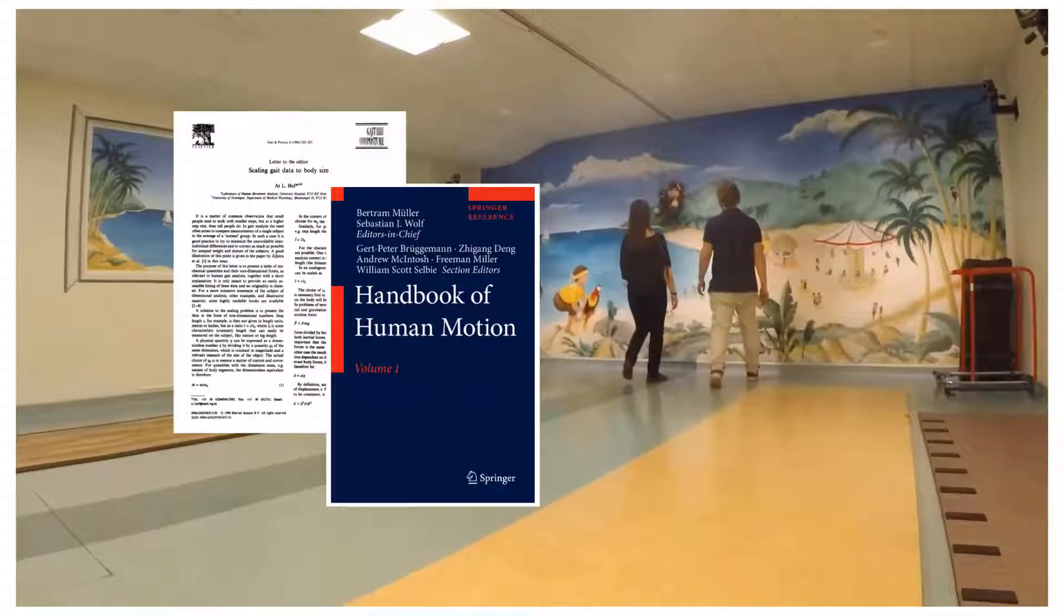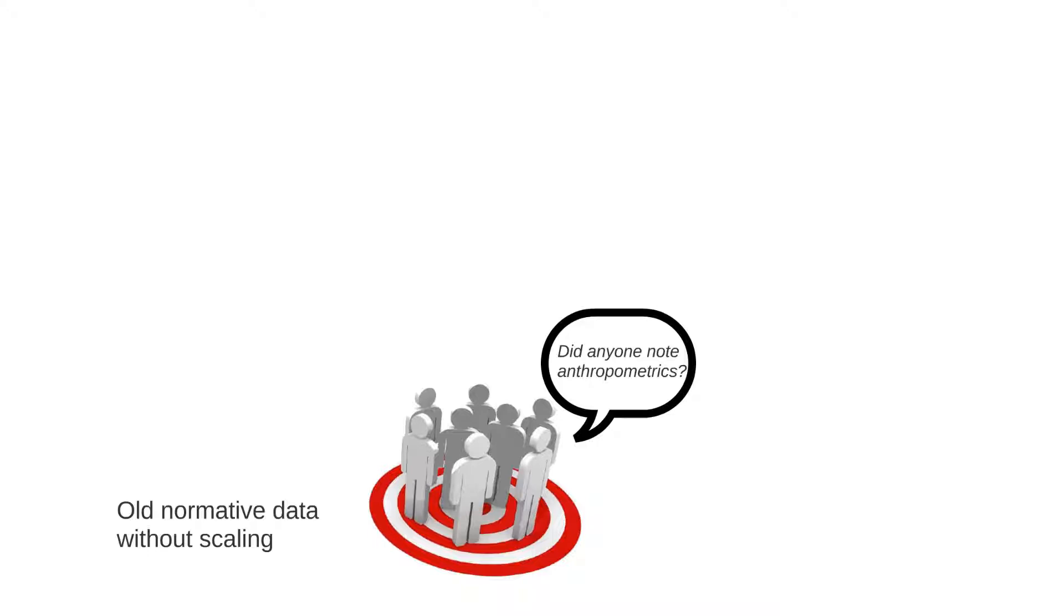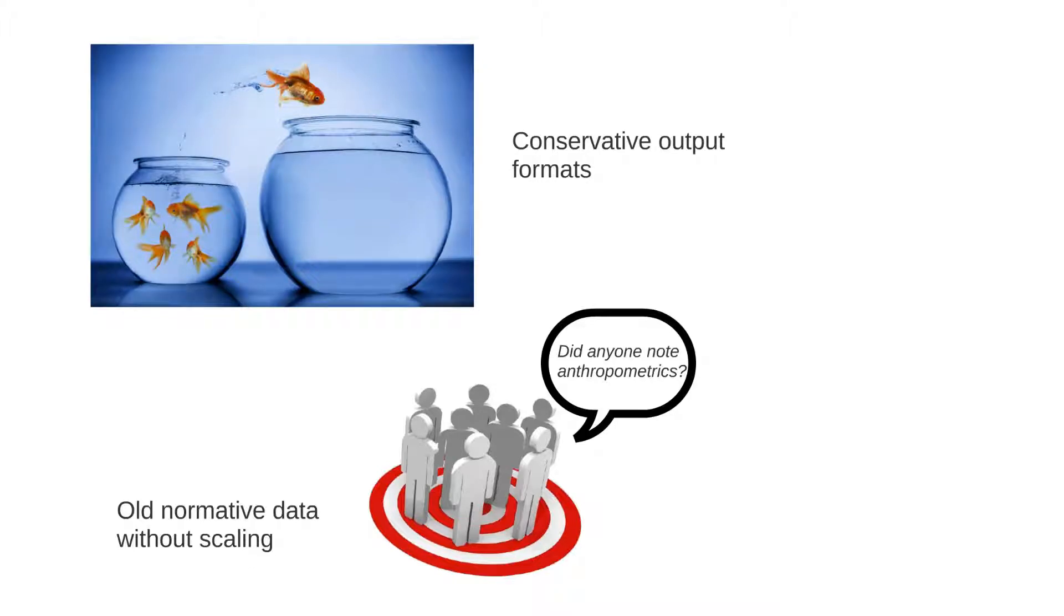Scaling gait data has been acknowledged and verified for a long time now. Hoff's well-known letter to the editor in the fourth issue of Gait and Posture was published in 1996. That, unfortunately, did not lead to the universal acceptance of normalization. In a brand new chapter in the Handbook of Human Motion, Hoff again considers geometric scaling and gives several reasons. Very often, patient data has to be compared to normal data of healthy subjects. Historically, when this normative data was collected, scaling was not used, not to mention, many normative data sets were collected in software packages with conservative output formats.